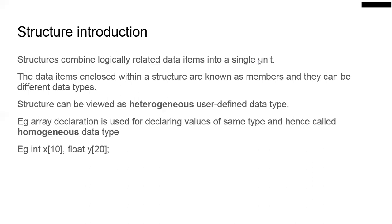The data items enclosed within a structure are known as members. When you define a structure of a student, the roll number and branch become members of that student. Each member can be of a different data type — name is a string type, roll number is an integer type, marks are floating type.